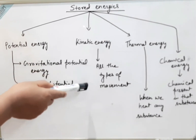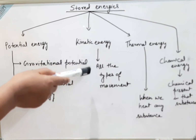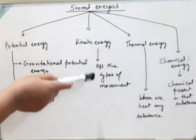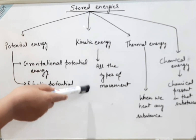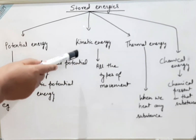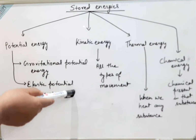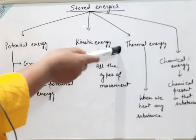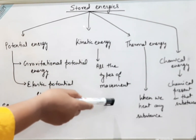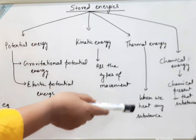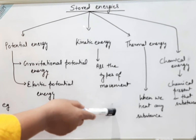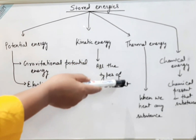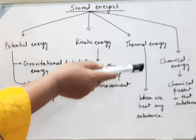Kinetic energy can be stored in an object because of its movement — any kind of movement will store kinetic energy in that object. Thermal energy can be stored in any object when we heat it, and chemical energy is stored because of the chemical substances present in that object.